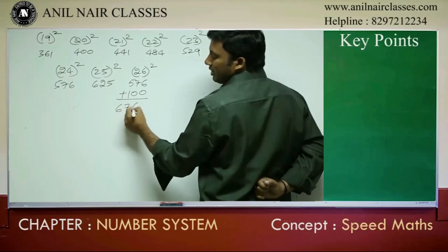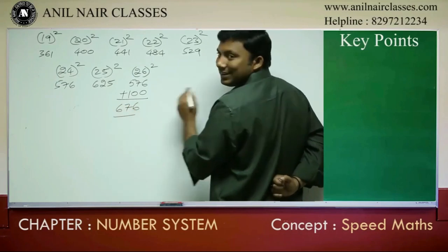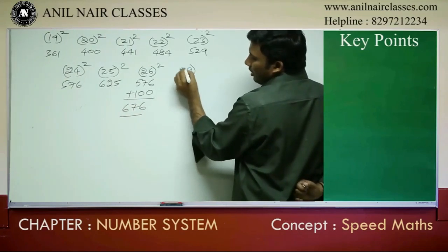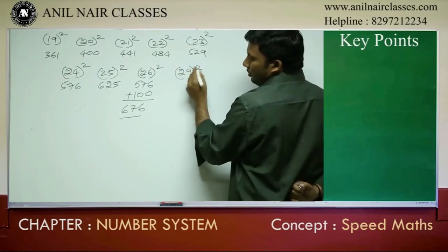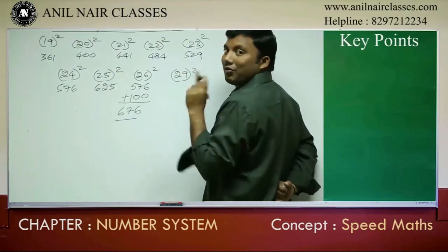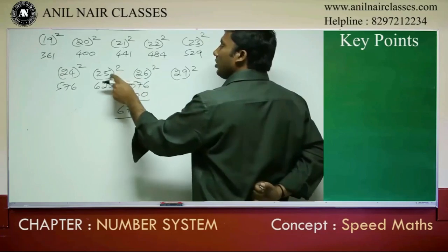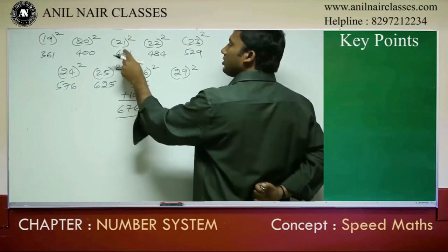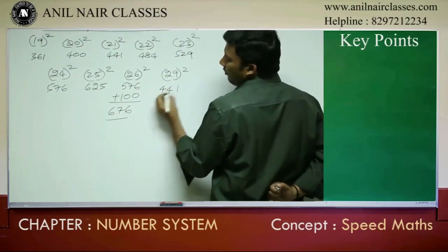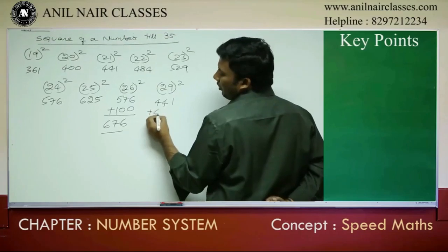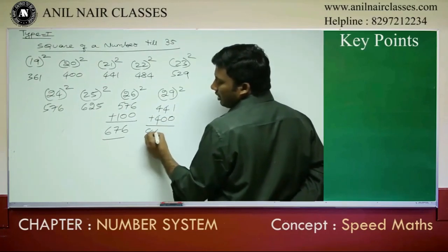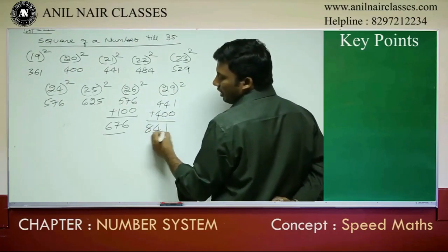Suppose we want 29 squared. 29 is how many units ahead of 25? It is 4 units ahead of 25. Go 4 units back, which gives 21, and 21 squared is 441. Since it is 4 units, add 400. The answer is 841.